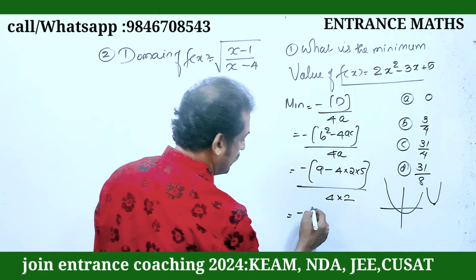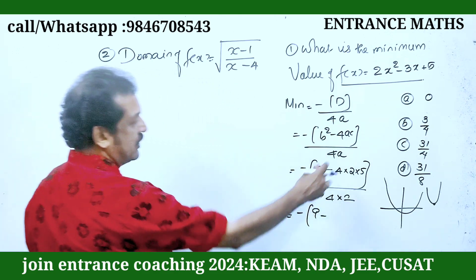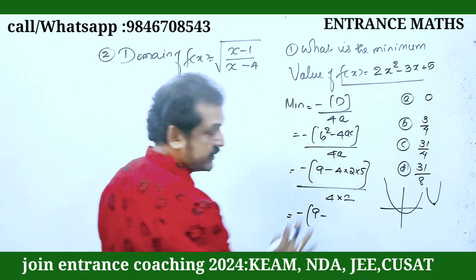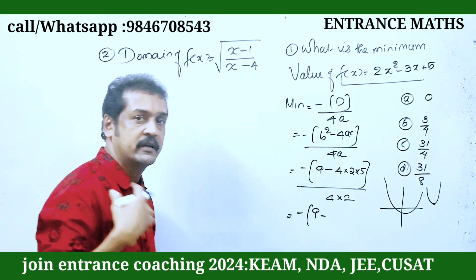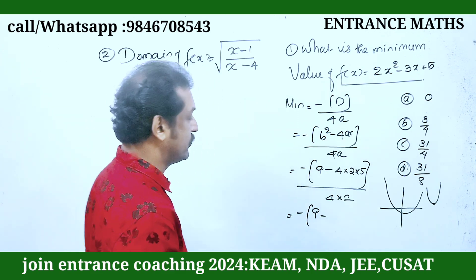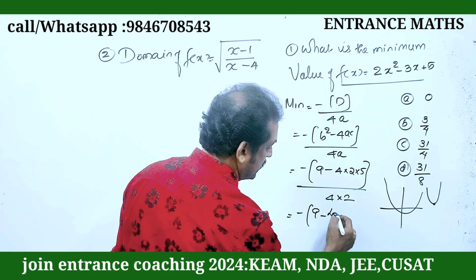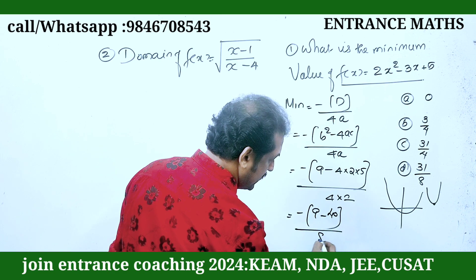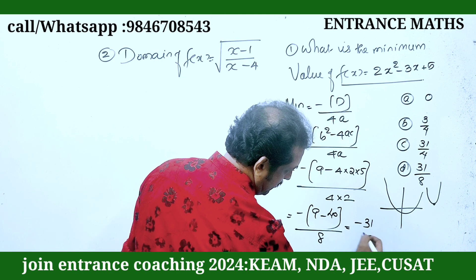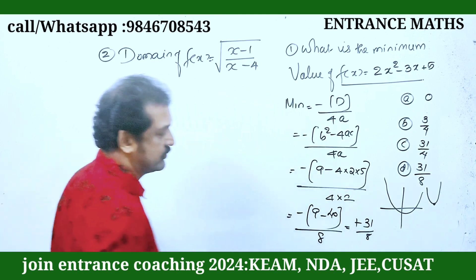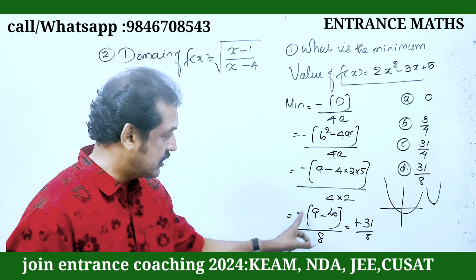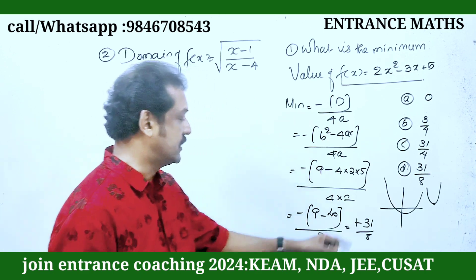That is equal to minus of 9 minus. Then 5 into 10 into 4 is 40. So 9 minus 40, whole divided by 8. That is minus 31. Minus of minus 31 by 8. Since 9 minus 40 is always minus, the answer is 31 by 8.